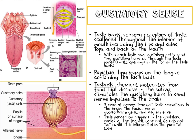The papillae are the tiny bumps on the tongue that contain the taste buds. Notice in this picture, the taste buds are along all those tiny bumps on your tongue. The tastants are the chemical molecules from food that dissolve in saliva, which stimulates the gustatory hairs to send nerve impulses to the brain. The gustatory hairs are surrounded by saliva, and that is what transmits the message to the brain.